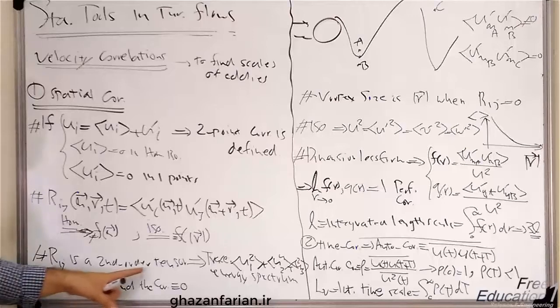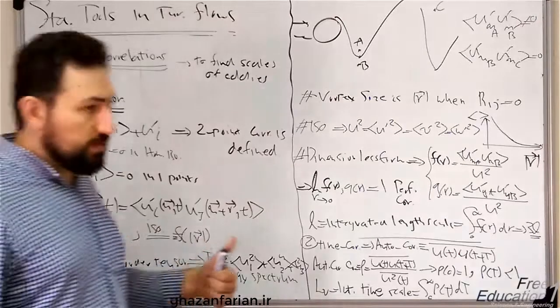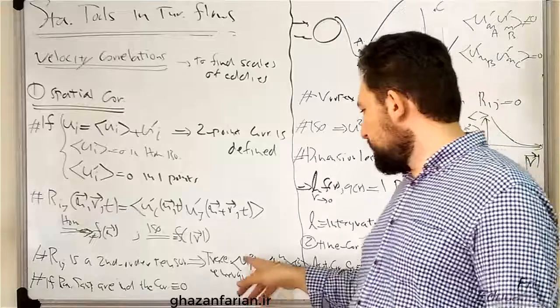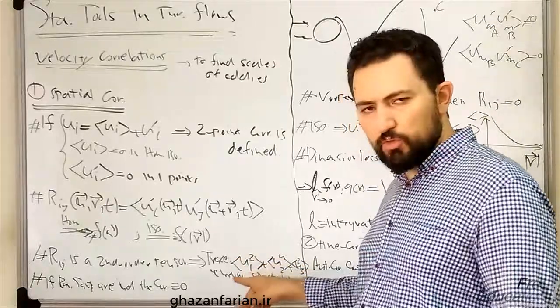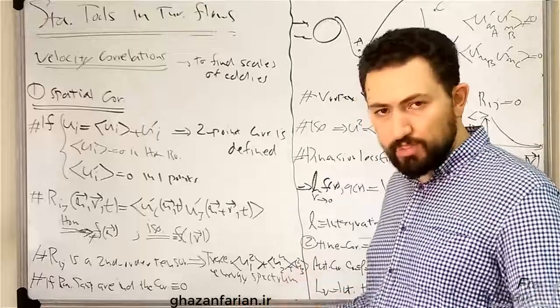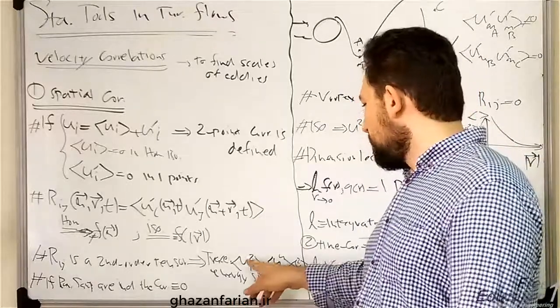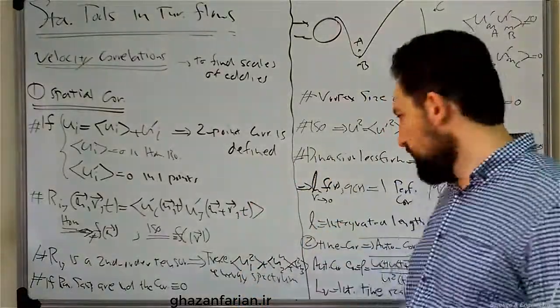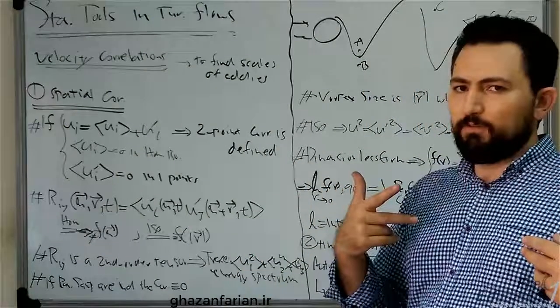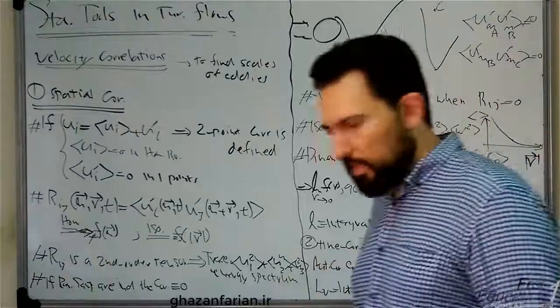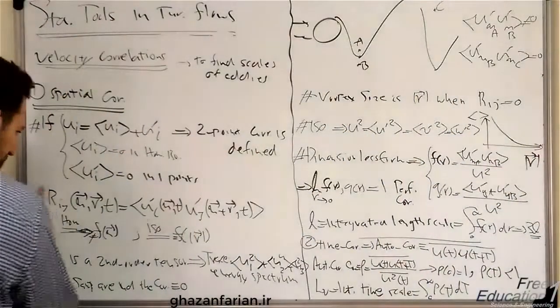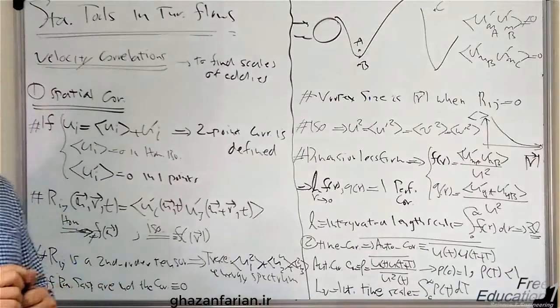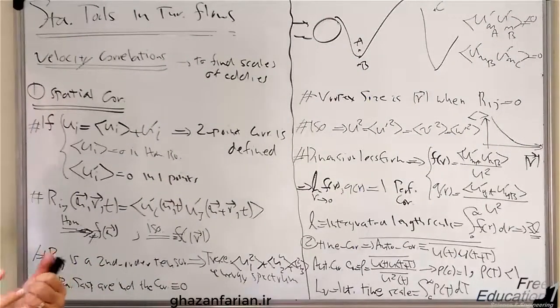R_ij is the second-order tensor. The trace of this tensor, or the first invariant of the velocity correlation tensor, is, as you know, the ensemble average—where one shows the x-direction, for example, two the y-direction, and three the z-direction—the squared velocity in x-direction, ensemble of squared velocity in x-direction, plus ensemble of squared velocity in y-direction and in z-direction. This is the trace of the velocity correlation tensor, which is used in the definition of the energy spectrum, which is not the scope of this video.